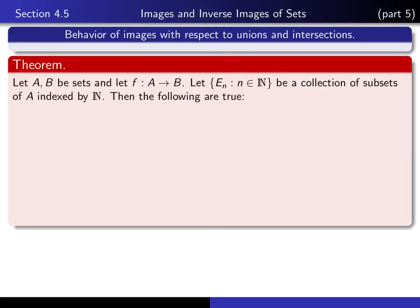So E sub n, such that n varies over the natural numbers, is a collection of subsets of A indexed by n. Then the following are true.